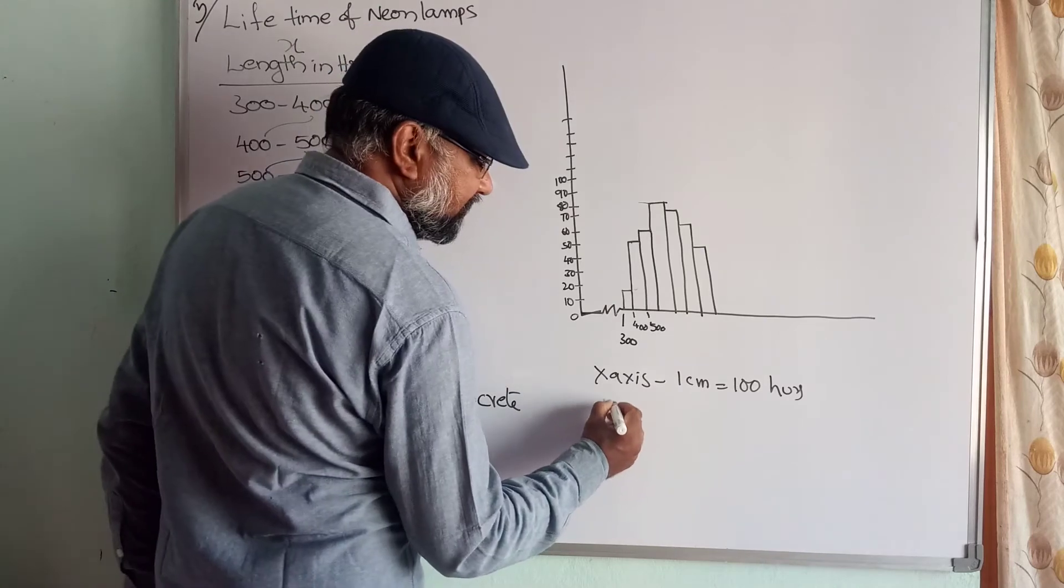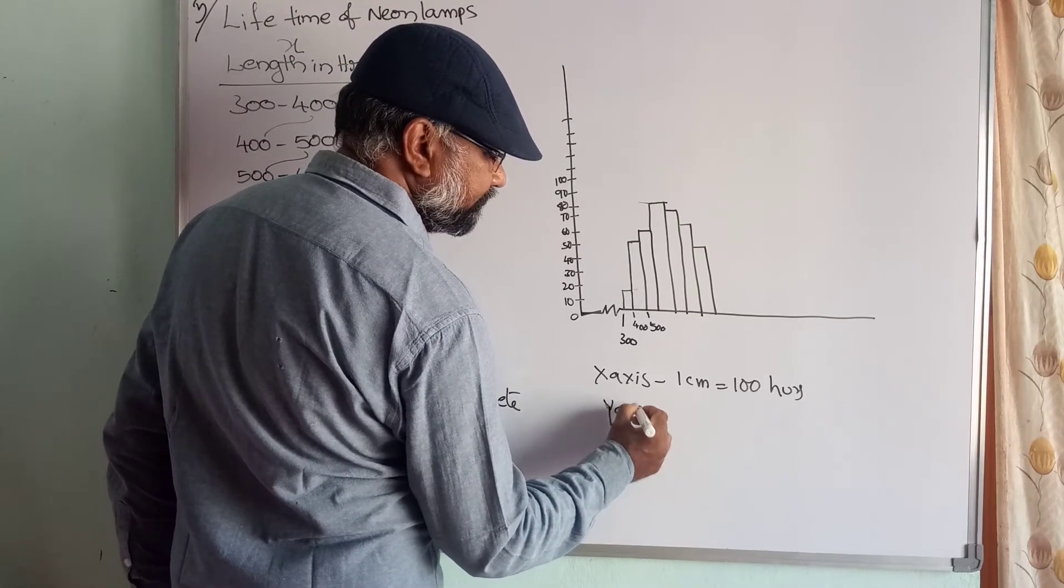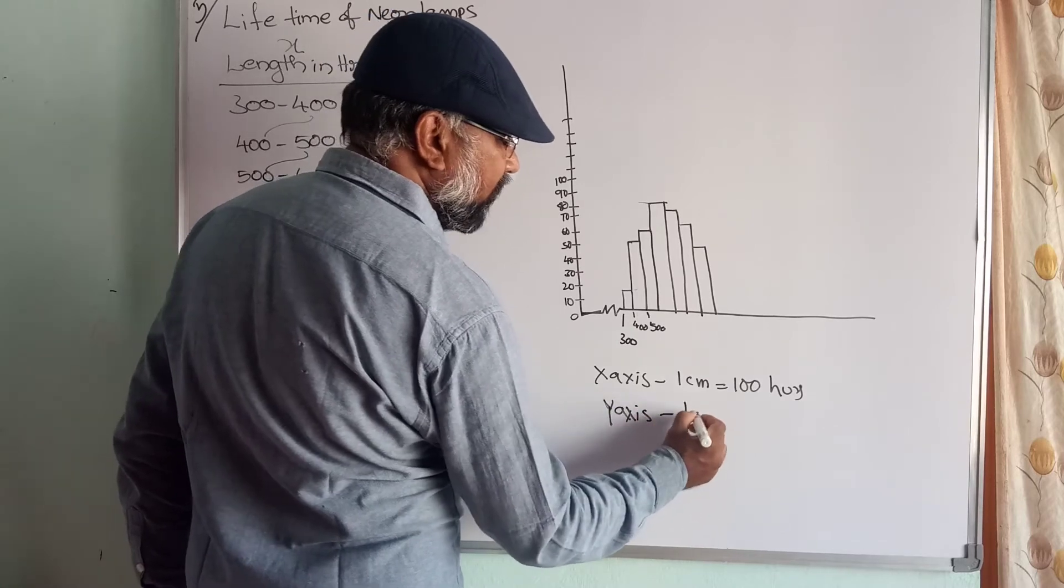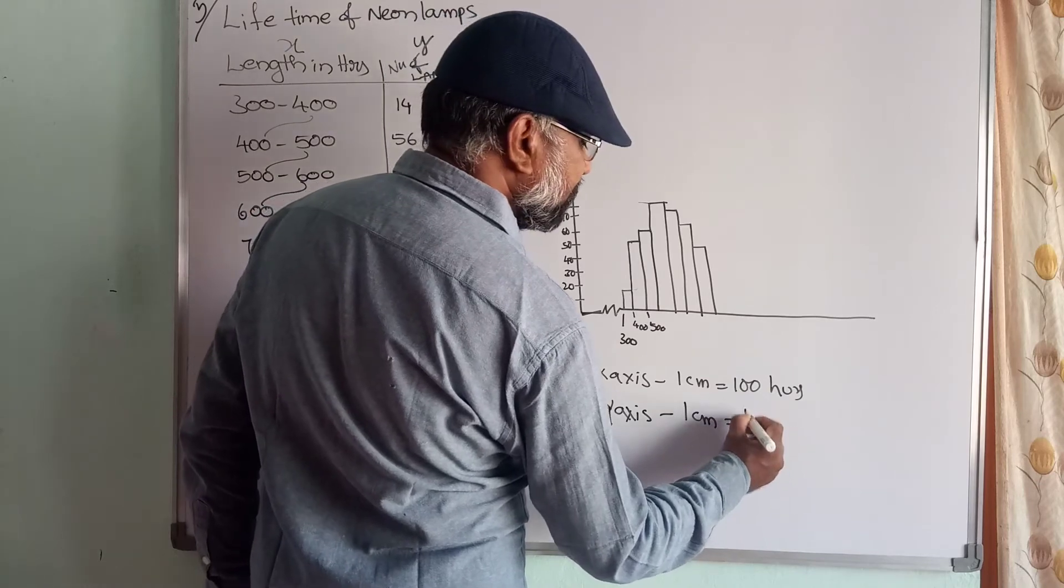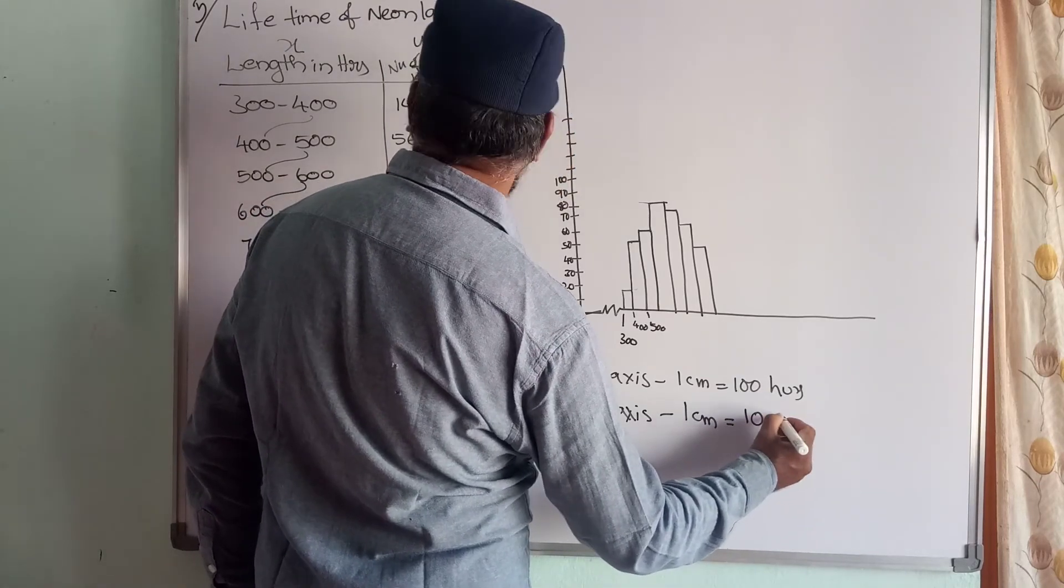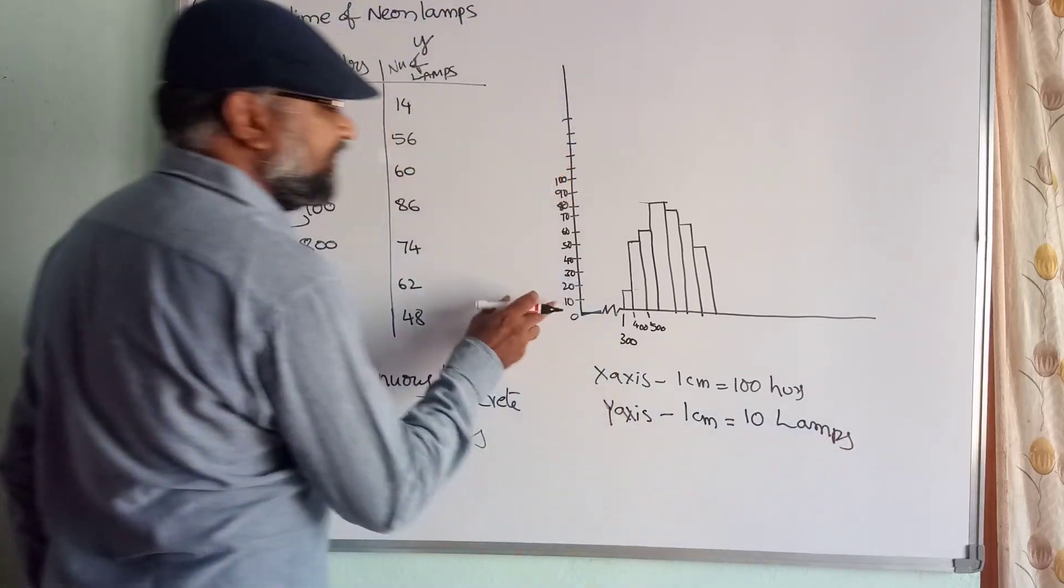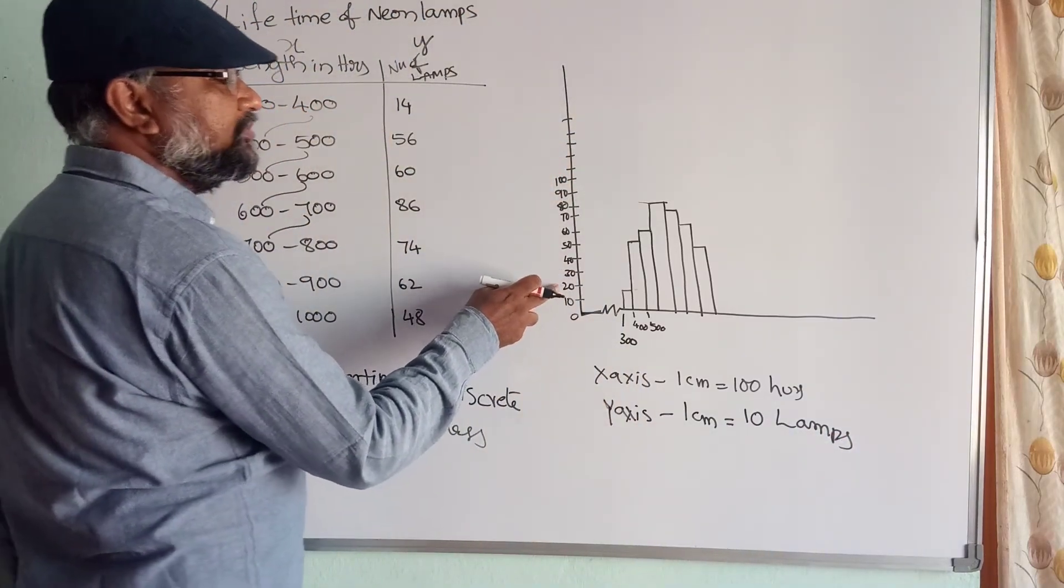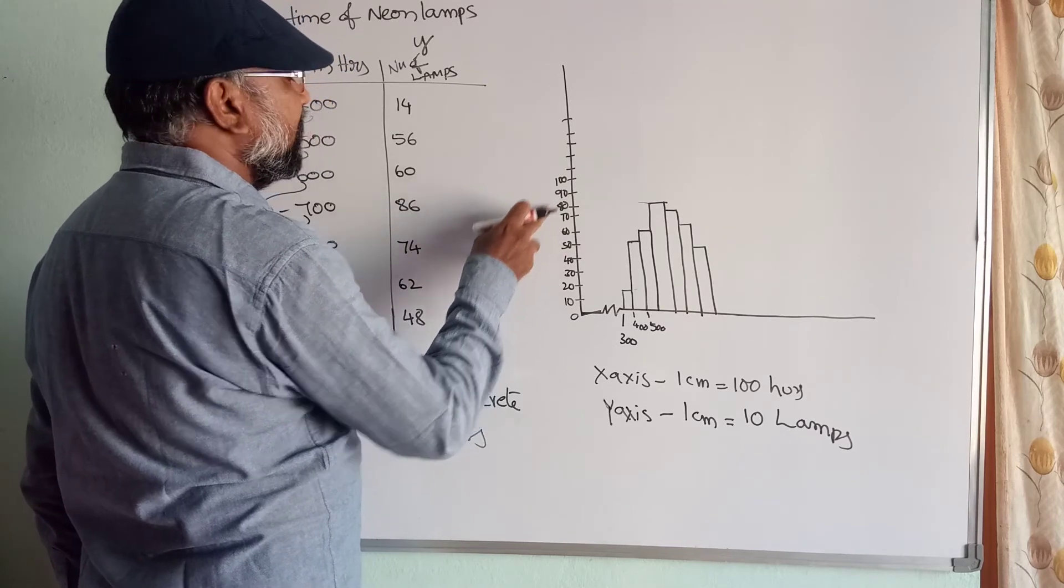And y-axis, 1 centimeter is equal to 10 lamps. You mark 10 lamps, 20 lamps, 30, 40, 50, 60, 70, 80, like that.